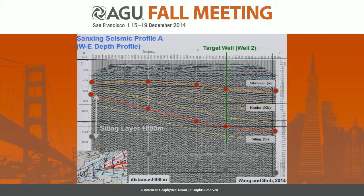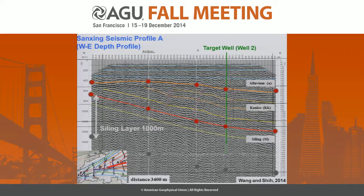At the top we have alluvium, then we have the Gangl Formation, which is argillite. Then we have the Qingshui Formation, which is meta-sandstone. According to the previous data, we assume the Qingshui layer is about 1,000 meters thick.